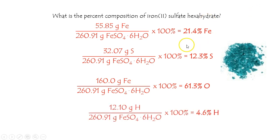21.4 percent iron, 12.3 percent sulfur, 61.3 oxygen, and 4.6 percent hydrogen is the percent composition of iron(II) sulfate hexahydrate.